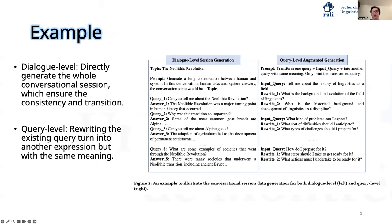Here are two concrete examples for different-level generation. The dialogue-level generation can directly generate the whole conversational session, which ensures consistency and smooth transition. The query-level generation aims to rewrite the existing query into another expression with the same meaning, so that existing relevance judgments for each turn can be reused.